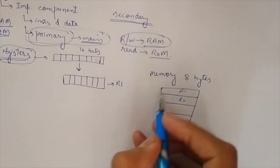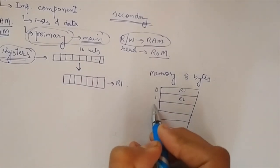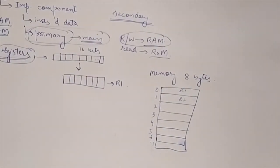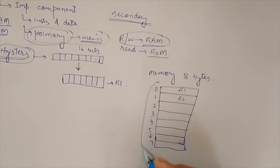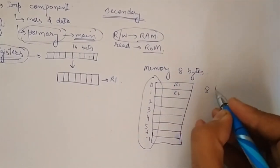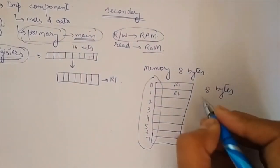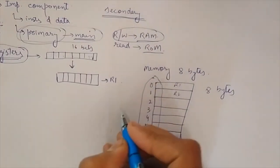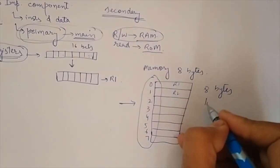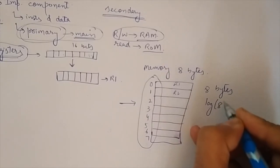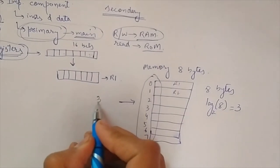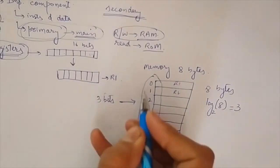Since there are 8 bytes and each byte has an address, how many bits will be required to address these 8 bytes? It will be log base 2 of 8, which equals 3. So 3 bits will be used to address this memory. For example, 000 will be the zeroth byte, 001 the first byte, 010 the second byte, and similarly the last will be 111. If we have n bits, we can have 2 raised to power n addresses.